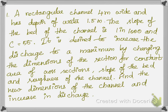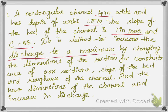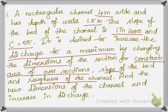Hello everyone, this is Dr. Surya. Today we are going to see one more problem on most economical rectangular channel. The problem states: a rectangular channel 4 meter wide has a depth of water of 1.5 meter, the slope of the bed is 1 in 1000, and the C-value (Chezy's constant) is 55. It is desired to increase the discharge to a maximum by changing the dimensions of the section for constant area of cross-section, slope of the bed, and roughness of the channel. Find the new dimensions of the channel and the increase in discharge.